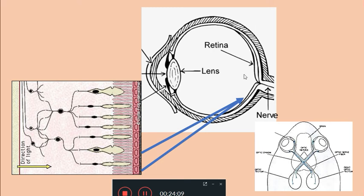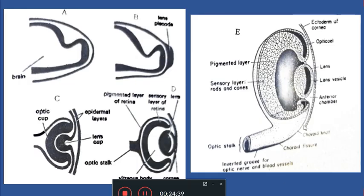The retina consists of cone cells, rod cells, bipolar cells, and ganglion cells. The ganglion cells have nerve fibers, and these nerve fibers all converge at this point and get out of the eye; this point where they converge is called as the blind spot. The optic nerve comes out through the optic stalk and through the choroid fissure; later the fissure will close once the blood vessels are inside, becoming a solid closed optic stalk.